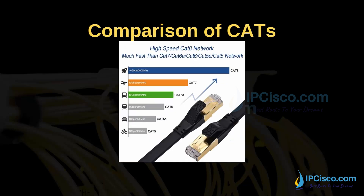Let's compare these Category cables with an analogy. Cat 5 is like a bicycle. Cat 5e is like a car. Cat 6 is like a train. Cat 6e is like a fast train. Cat 7 is like a plane. And Cat 8 is like a rocket — the fastest category available today.